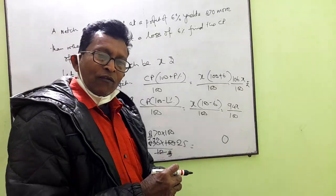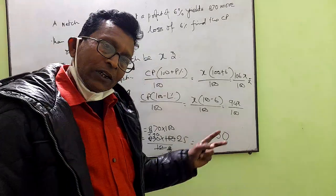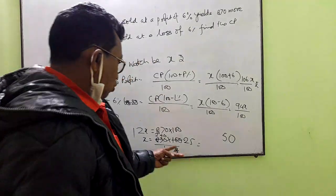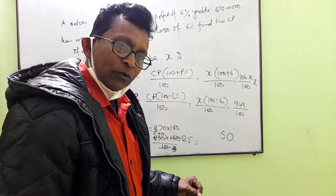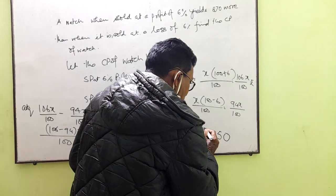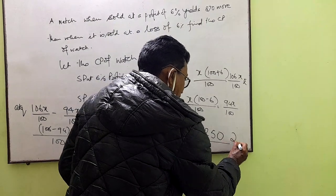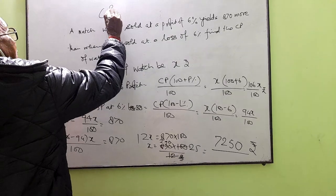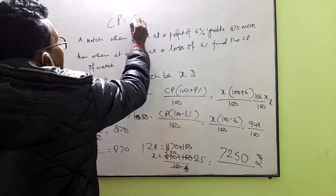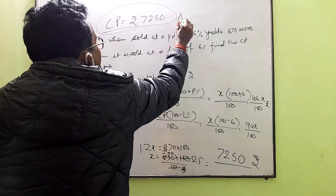Two to five, two to five, five carry twenty-two. Twenty-five, two zero is fifty. Fifty plus twenty-two is seventy-two. Seven two five zero is the CP. So CP will be CP is equal to rupees 7250, and this is the answer.